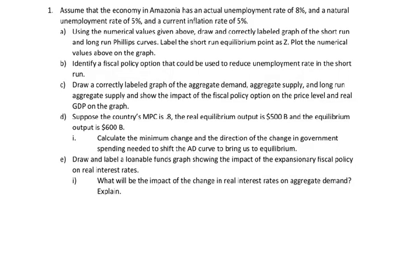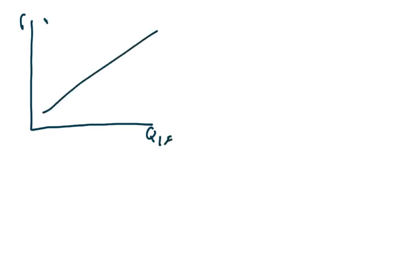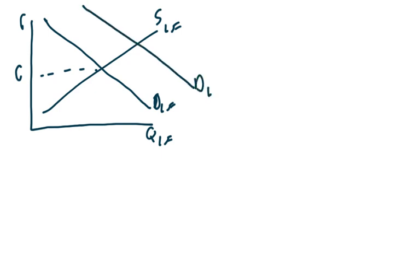Part E says: draw and label a loanable funds graph showing the impact of the expansionary fiscal policy on real interest rates. So let's draw a loanable funds graph. The government is going to have to borrow money to spend it since they don't have enough — we call that deficit spending — and that's going to drive up real interest rates.